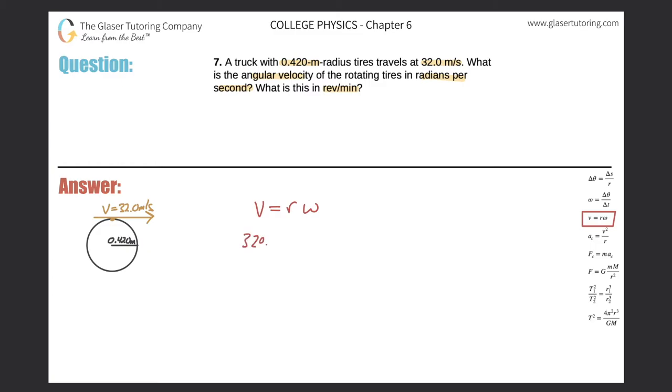So let's plug it in. So 32.0 is equal to the radius 0.42, multiply then by the angular velocity. So simply just divide 0.42 out on both sides.